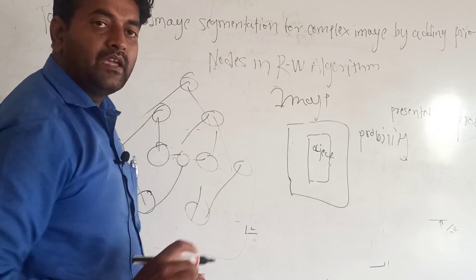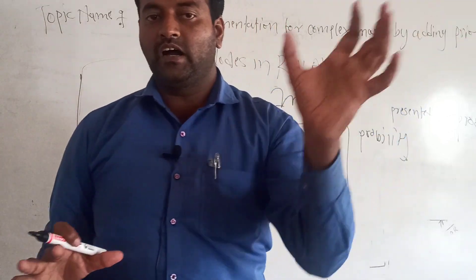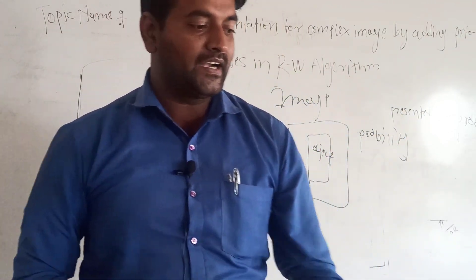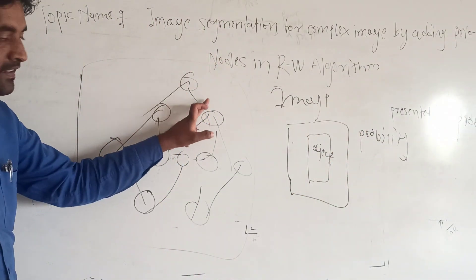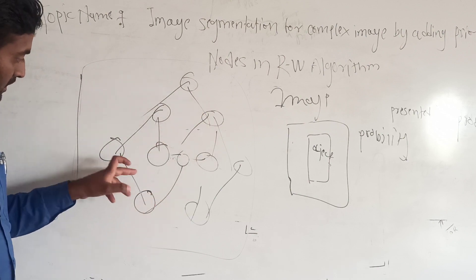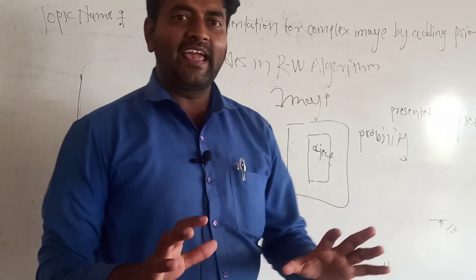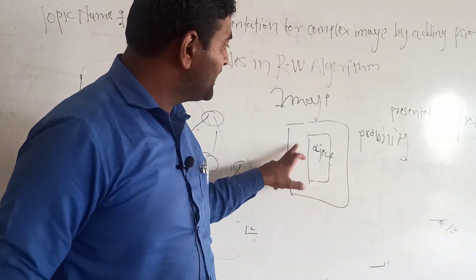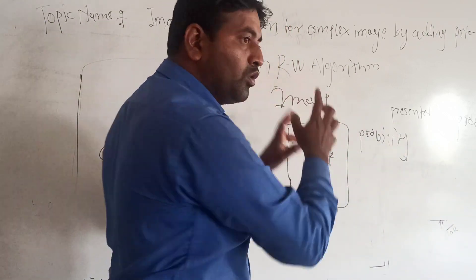Each node has some probability values, and using the random walk algorithms, the walker walks along the edges of those nodes and edges, and it exactly detects the boundary of that object — using our proposed random walk algorithms.